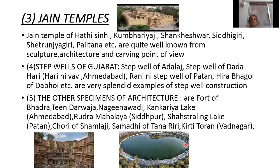Jain religion spread in Gujarat and with its spread many Jain temples were built. The famous Jain temples are those of Hathi Singh, Kumbhariyaji, Sangeshwar, Siddhagiri, Shatrunjay Giri, and Palitana. They are famous from the sculpture, architecture, and carving points of view.